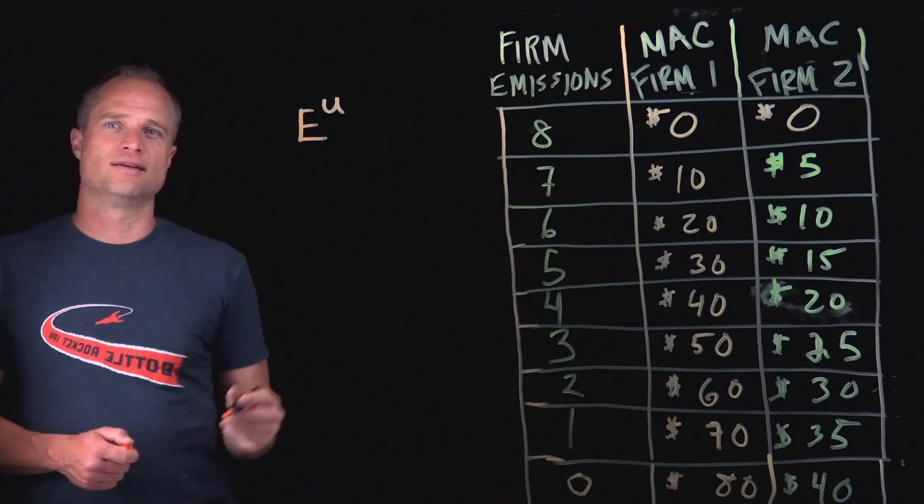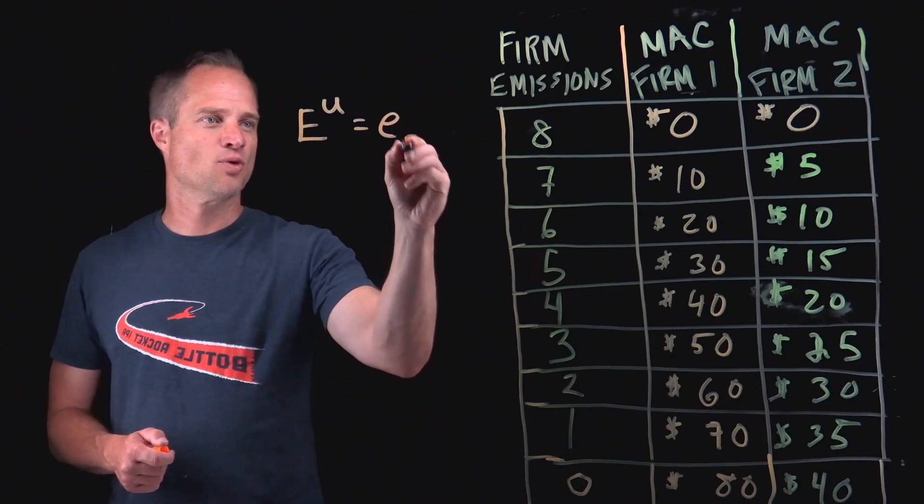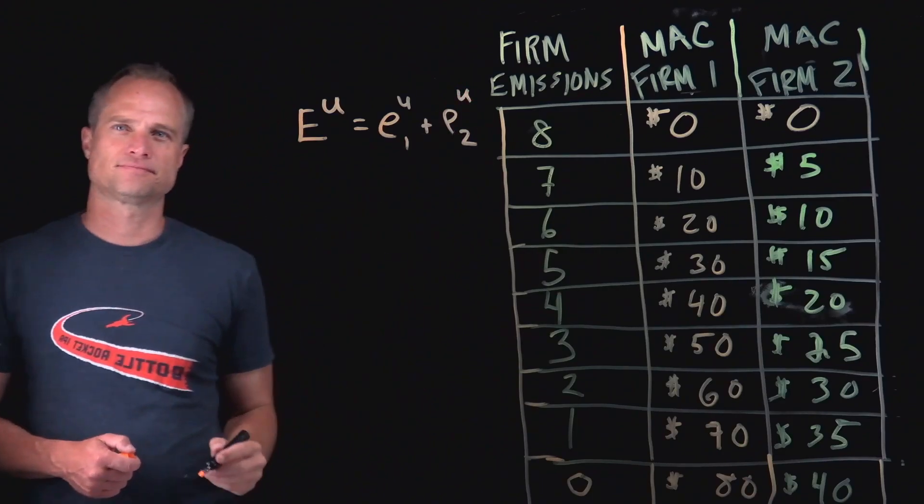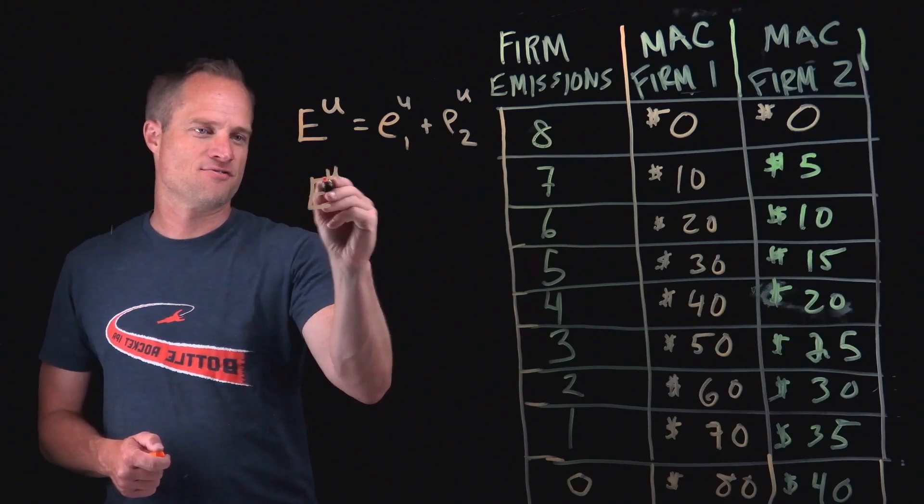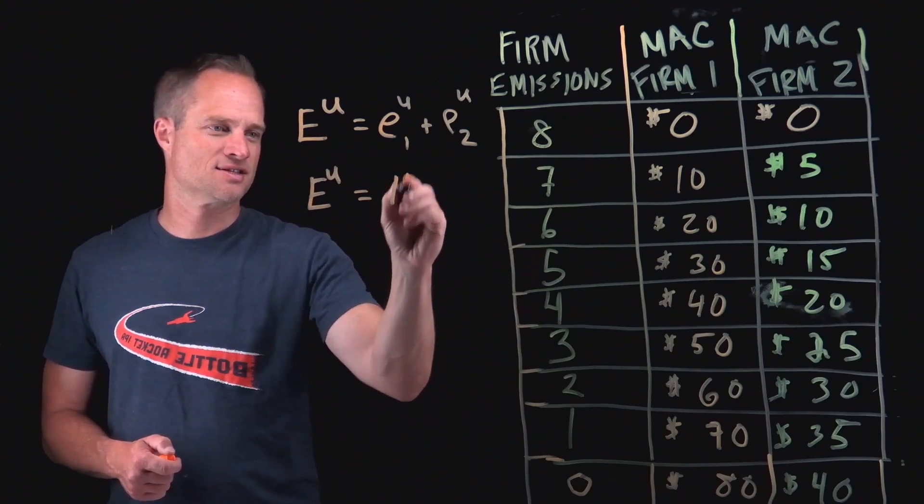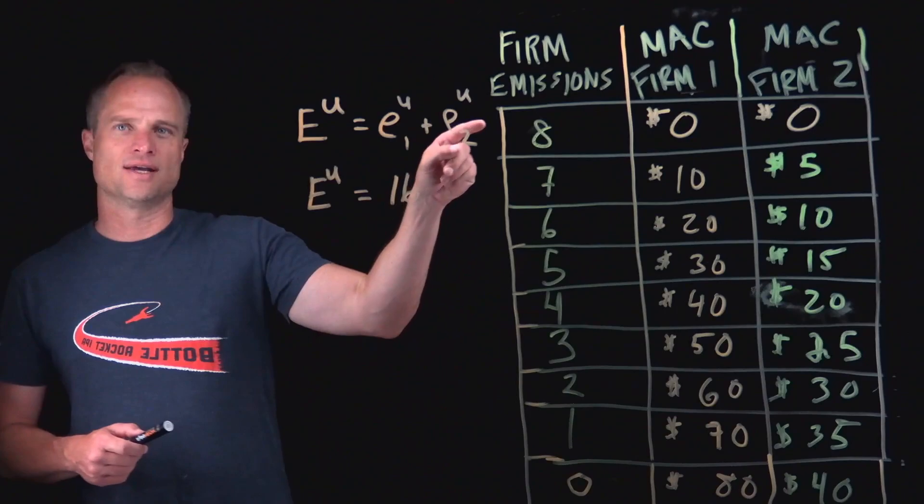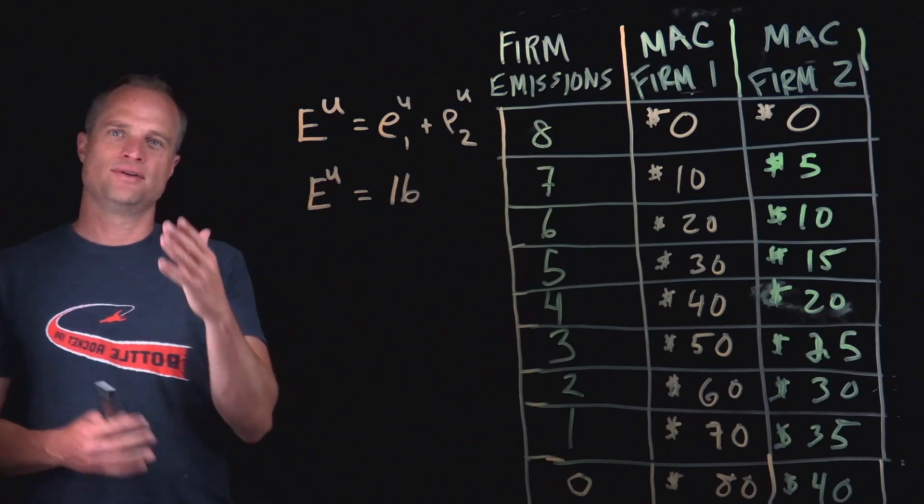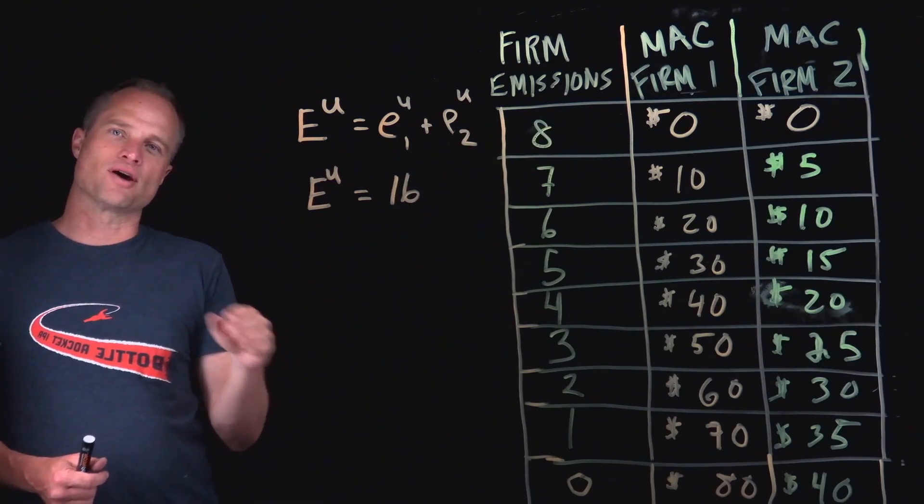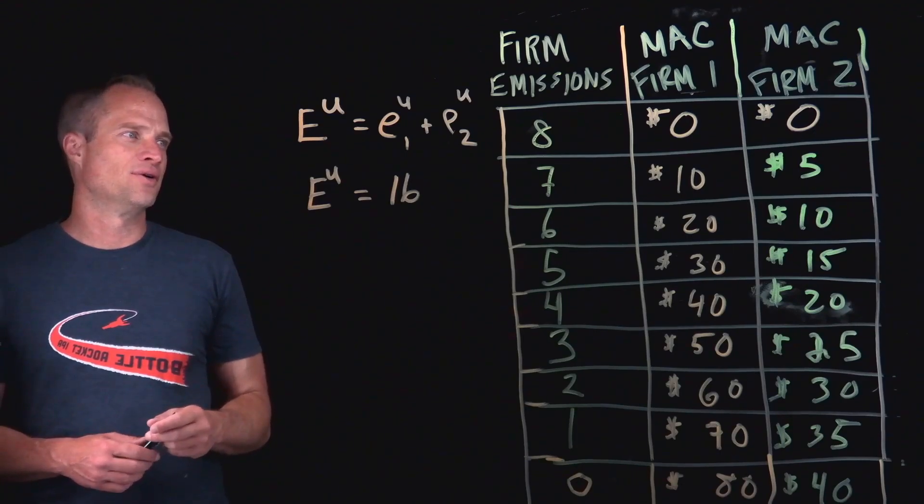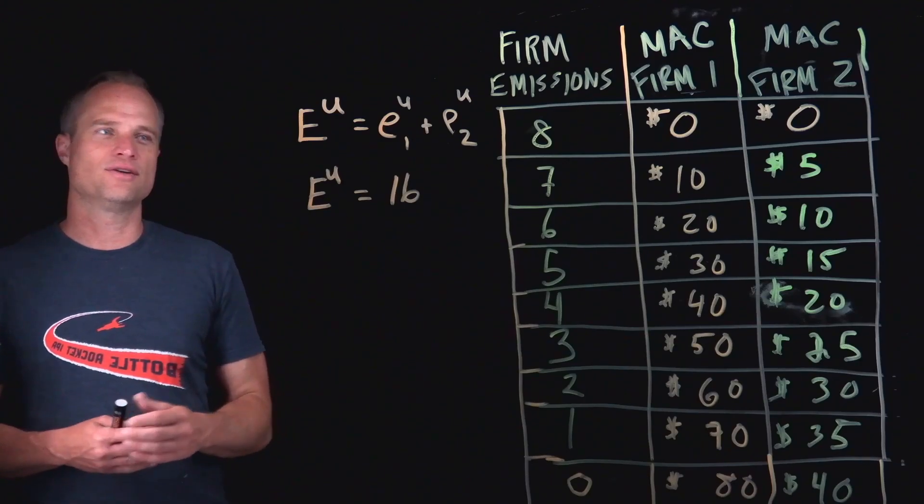The unregulated total emissions is firm one's unregulated and firm two's unregulated. And we could just infer from the way the mechanics of the table work that this would be 16. And we know that because when marginal abatement cost is zero, you could think that's their marginal abatement cost curve. That's where it intersects that horizontal axis. And so in a world without regulation, each firm is emitting eight units.